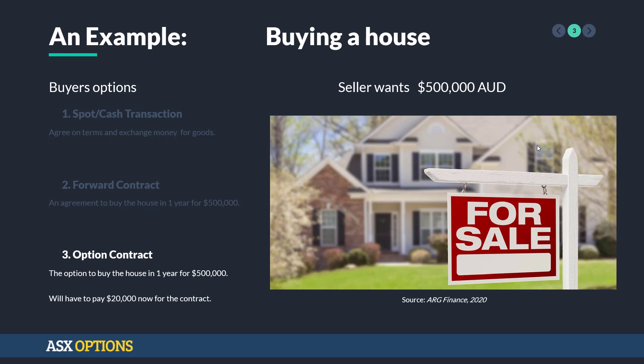To get this flexibility, we're going to have to pay a premium. In this example, that premium is $20,000 for the contract. So the seller would get the $20,000 now, and in a year's time, we may or may not decide to buy the house, at which time we would have to hand over the $500,000 and the seller would give us the deed to the house.